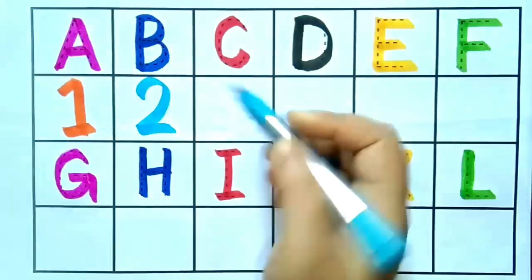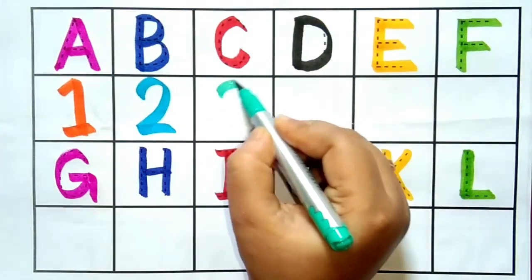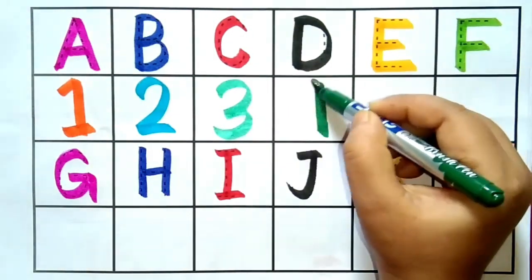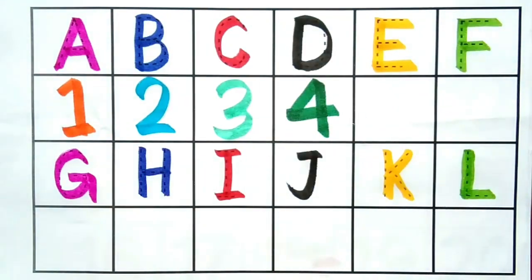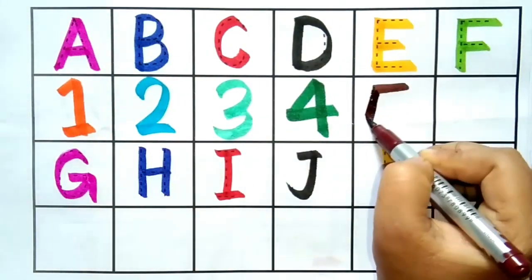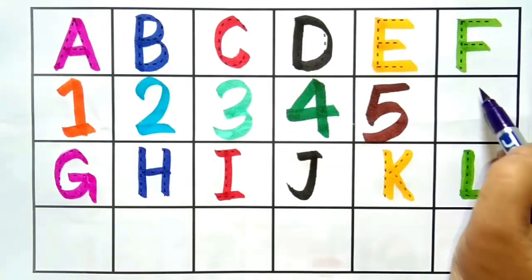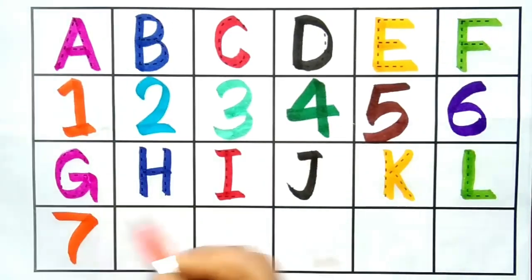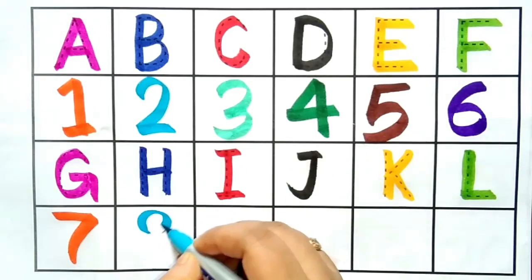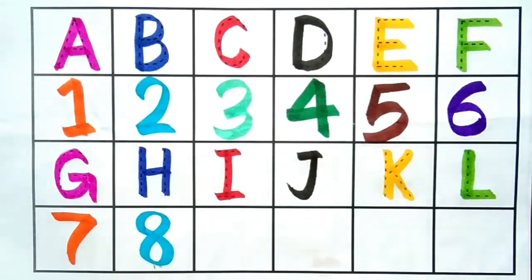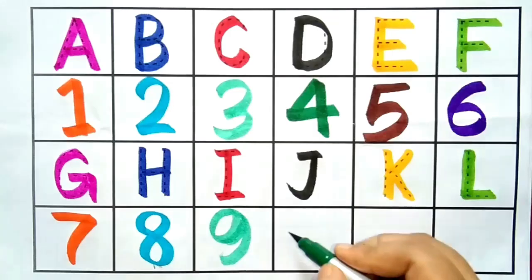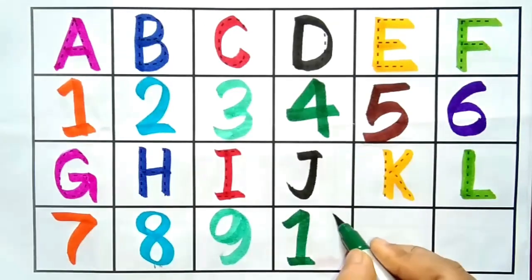Two, this is number two. Three, this is number three. Four, this is number four. Five, this is number five. Six, this is number six. Seven, this is number seven. Eight, this is number eight. Nine, this is number nine. Ten, this is number ten.